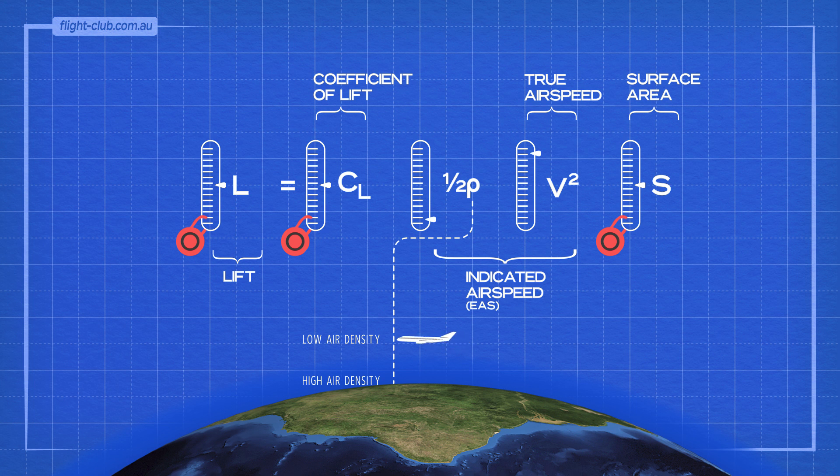So when pilots look at the airspeed indicator and choose to fly the aeroplane at a certain indicated airspeed, the true airspeed is always greater the higher they are. This is good for efficiency.